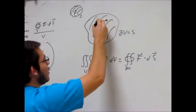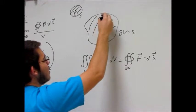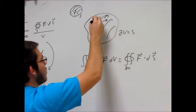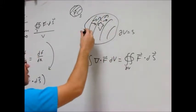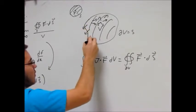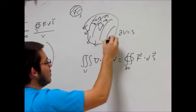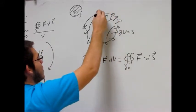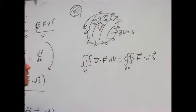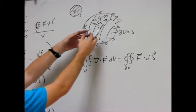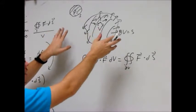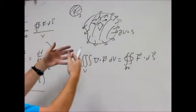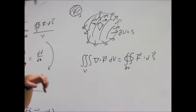So if we account for all the points where it's diverging and all the points where it's converging and add them all together, we should get the total flux going out of this region. This makes sense because more fluid is being created if it's flowing out, or if it's flowing in, that means more is being sucked out or depleted from the inside of the region.